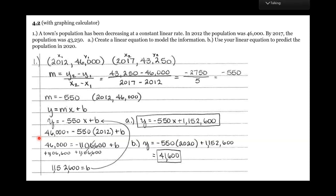It says the town's population has been decreasing at a constant linear rate. Linear, of course, tells us it's a line. In 2012, the population was 46,000. By 2017, the population was 43,250. So there are our two ordered pairs.